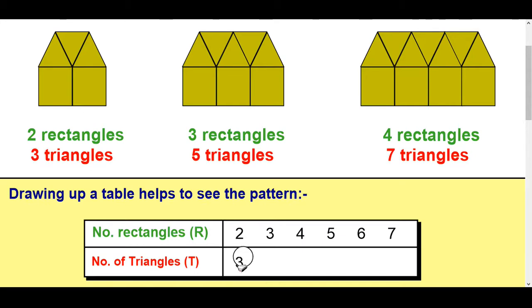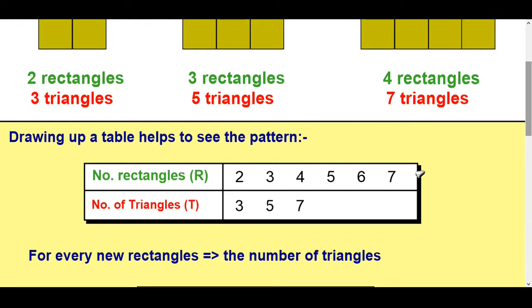So two rectangles was three triangles. Three was five, four was seven. So from the table, I'm noticing an increase of two each time. So I would imagine five is going to be nine, six is going to be 11, and seven is going to be 13.